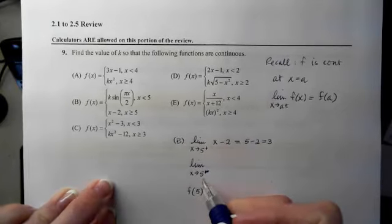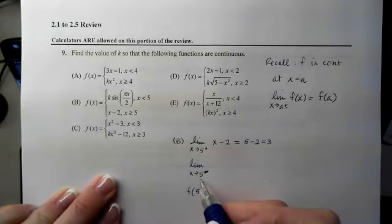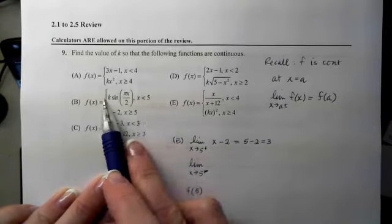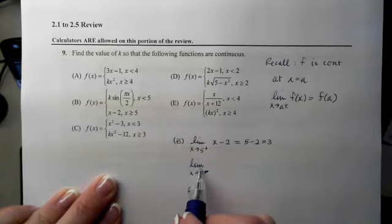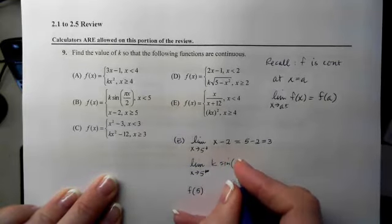If I look at the limit as I'm approaching 5 from the left-hand side, that means I need values of x that are a little smaller than 5. So looking up here at my joints, I can see that this branch deals with values of x that are smaller than 5. So computing this limit will require me to plug 5 in to this branch.